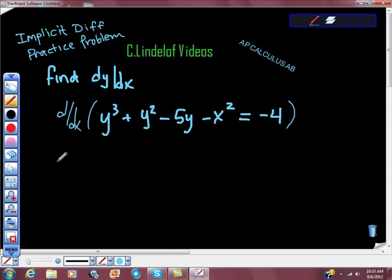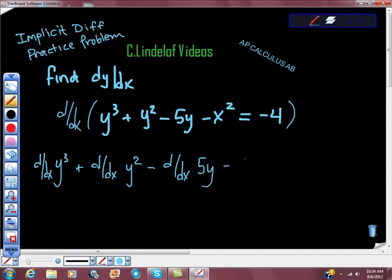So we're going to take d/dx of this whole thing, which leads to y cubed, we want d/dx of that, plus we want the derivative d/dx of y squared minus d/dx of 5y minus d/dx of negative x squared is equal to d/dx of negative 4, right? Just to give us an idea of what we're looking at here.